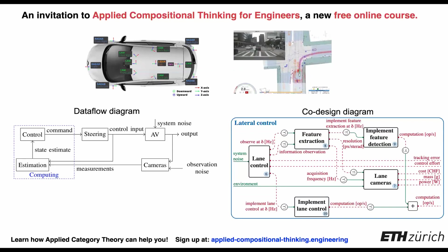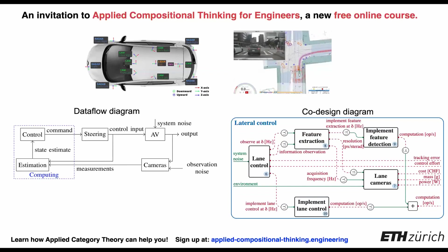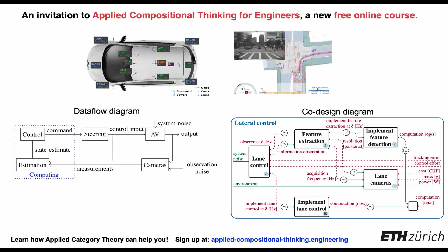Why do we need these components in the first place? A monotone co-design theory, a recent application of Applied Category Theory, allows to represent the functional dependencies of components, describing which subsystem provides which functionalities and the resources it needs.